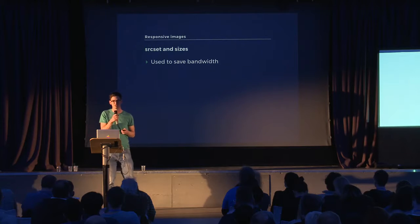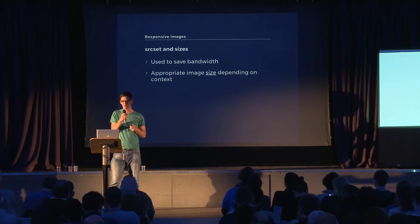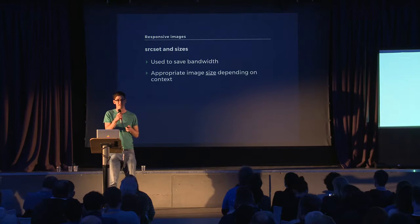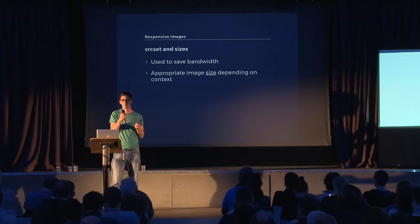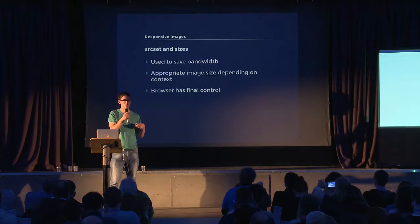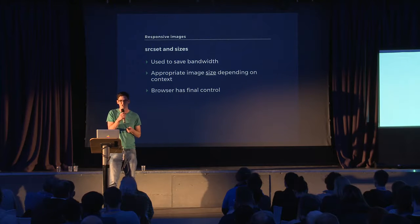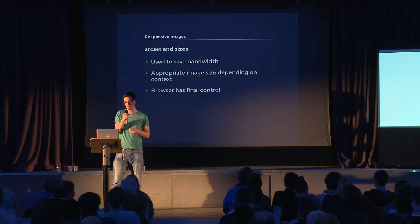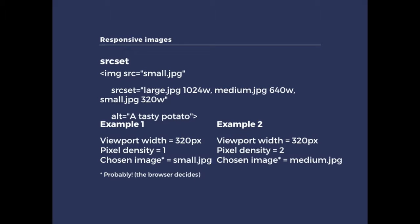What are source set and sizes? They're used to save bandwidth by loading the appropriate image depending on the context — essentially the viewport width or the width at which the image will be loaded. It's important to note that although we're giving the browser a hint as to which image to load, we're not actually making that final decision — that's up to the browser. Here's an example: I've got a fairly standard-looking image tag with a source, an alt attribute, and also a source set attribute. I've listed three image sizes of the same image, and beside each file name, the image width is also specified.